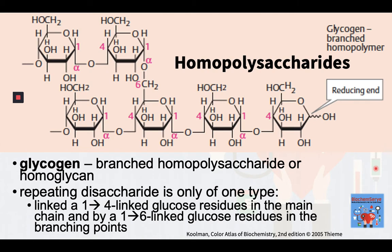What is shown here is a section of glycogen, which is an example of a branched homopolysaccharide, or homoglycan. Please take note of the repeating disaccharide — it is only of one type, that of alpha-O-glycosidic bond-linked glucose residues. The main chain is composed of repeating alpha-1,4-linked glucose residues. The branching points, as is shown here, are linked instead by alpha-1,6-linked glucose residues.